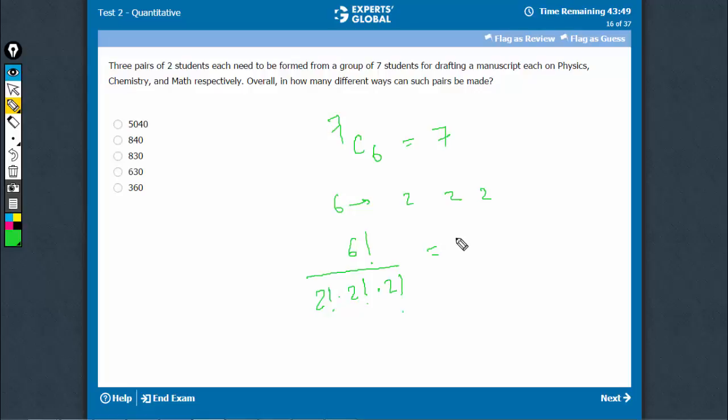Value of six factorial is 720. Value of 2 factorial cubed would be 8. So, that's 90.